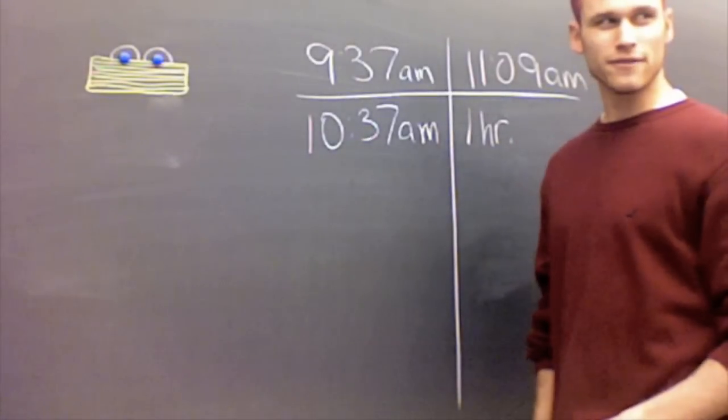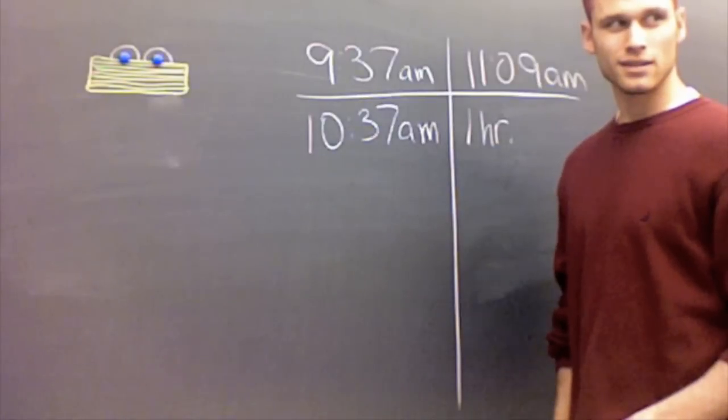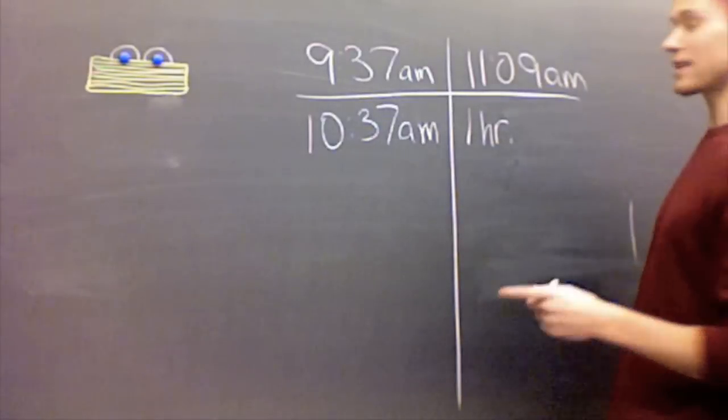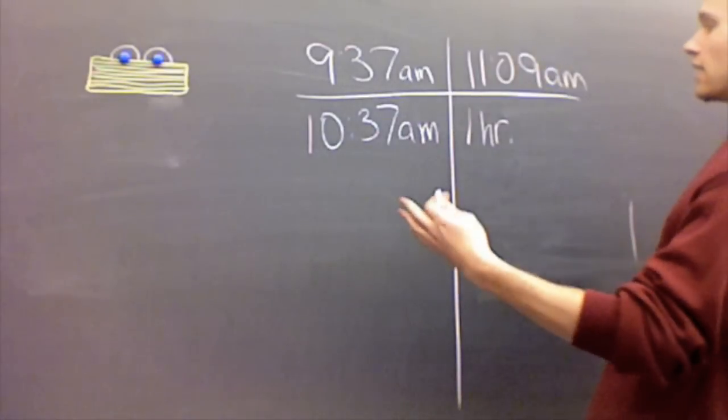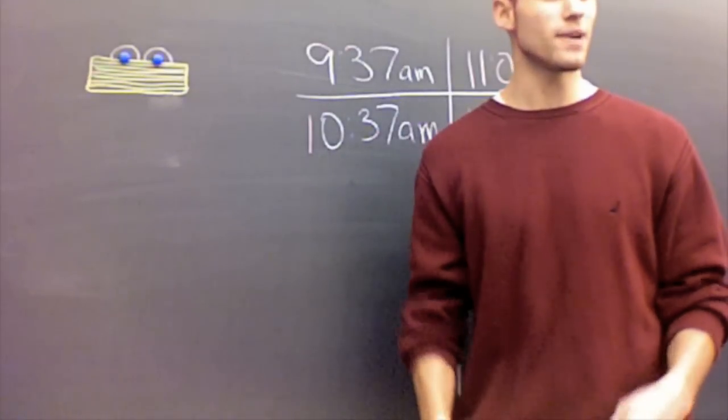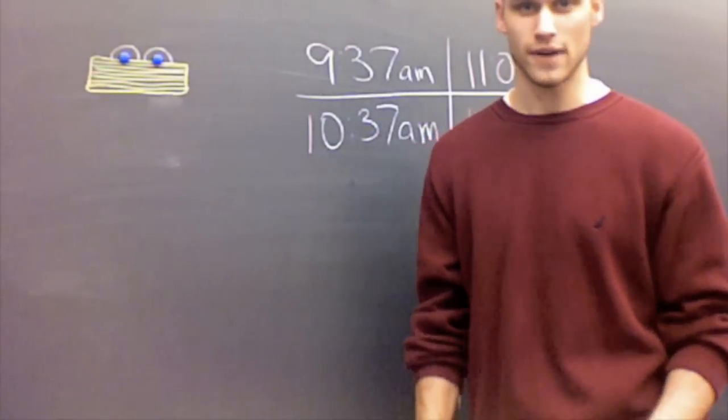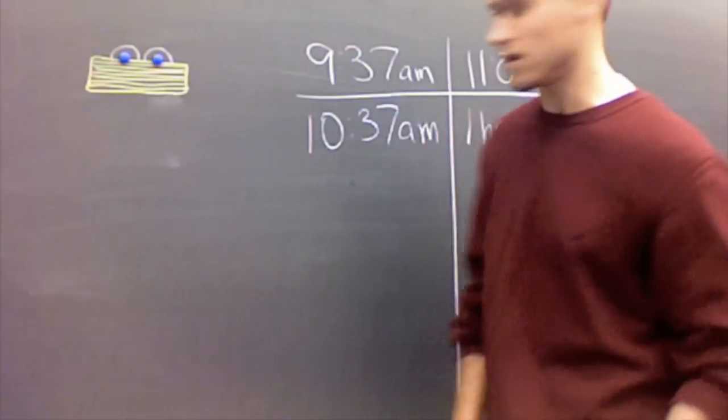Can I go to 11:37 for another hour? You could, but I think you would have gone too far. Yeah, I would go too far, so I can't go another hour, I have to go by minutes now. So, if I had to pick any number to go by minutes to make this easier on myself, I would probably go by 10 minutes. Because 10 is really easy to add up.